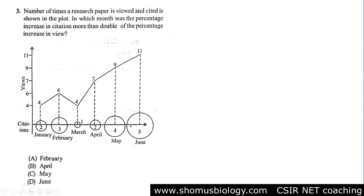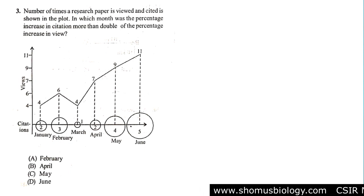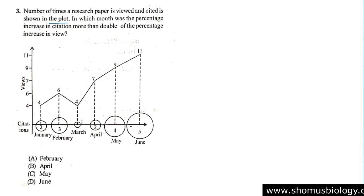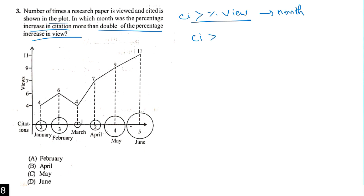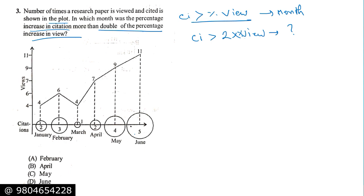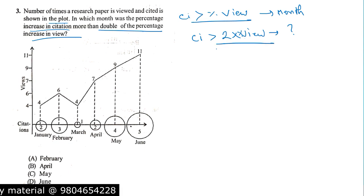Now another data interpretation problem: the number of times a research paper is viewed and cited is shown in a plot. The question asks: in which month was the percentage increase in citations more than double the percentage increase in views? So we need to find the month where the citation percentage increase is more than two times the view percentage increase. On the x-axis are months, and on the y-axis are citations and views.